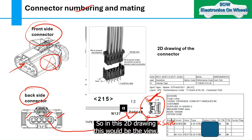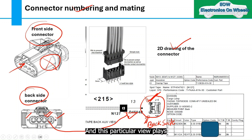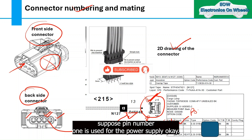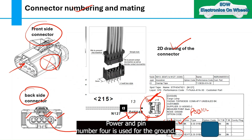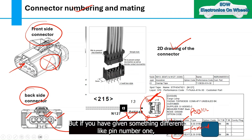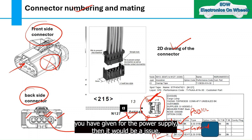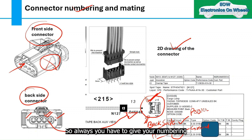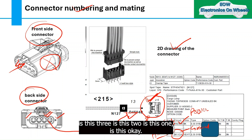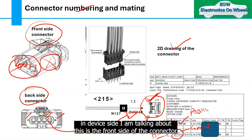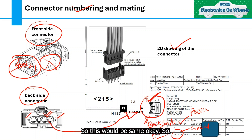So in the 2D drawing, the back side view is the one placed — this is very critical when assigning signals. Suppose pin number 1 is for power supply and pin number 4 is for ground. If you assign them incorrectly — pin 1 for ground and pin 4 for power — it would cause an issue. You must always give numbering based on the mating (device) side.